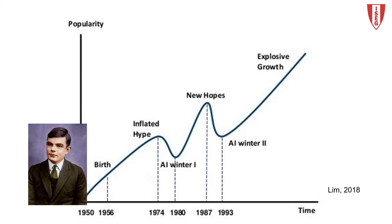In 1950, Alan Turing proposed the imitation game, later called the Turing Test. It tests the machine's ability to exhibit intelligent behavior indistinguishable from that of a human.